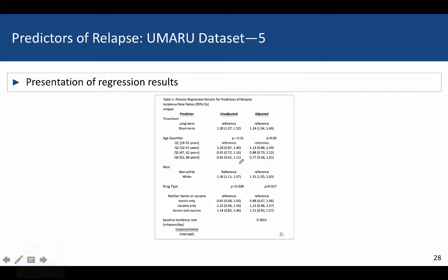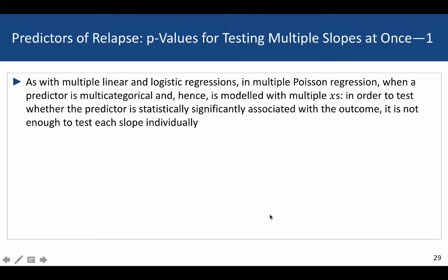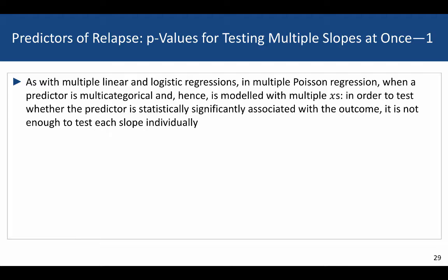Some of the other p-values reported for multi-categorical predictors give one p-value for the entire predictor set rather than for each individual comparison. As with multiple linear and logistic regressions, in multiple Poisson regression when a predictor is multi-categorical, testing each slope individually is not sufficient. In this model, the two multi-categorical predictors are age (four categories) and type of drug used (reference: neither heroin nor cocaine; indicators for heroin, cocaine, or both). To formally test whether age is a statistically significant predictor of relapse after accounting for sex, racial identity, and drug type, we need to jointly test the three slopes for age quartiles — beta_2, beta_3, and beta_4 — with the null that they are all equal to zero.